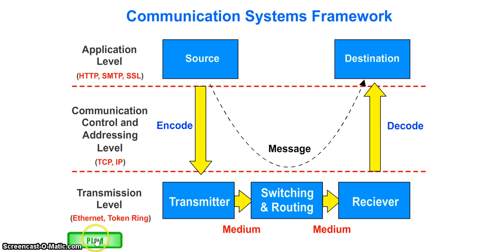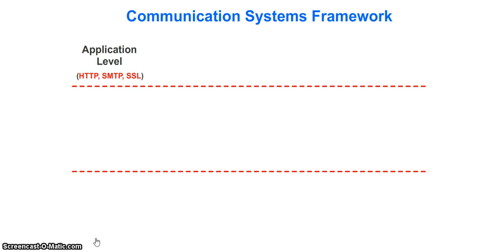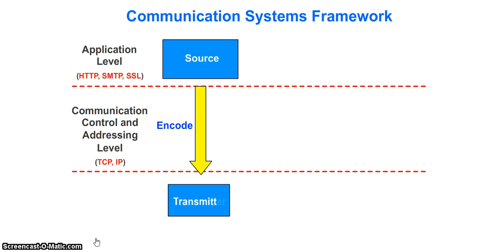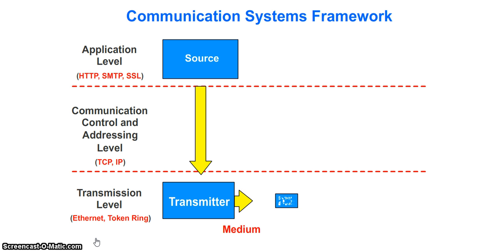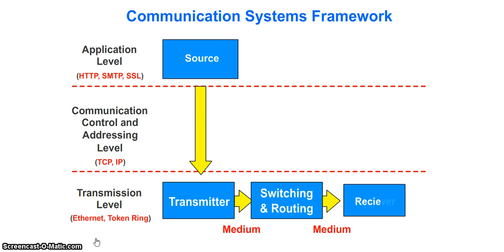If we're going to take a look at it, the message starts at the application level - HTTP for websites and SMTP for email here. It is saved at a source. Now the source needs to then encode the message in the communication control level before sending, and is then transmitted between switching and routing between devices.